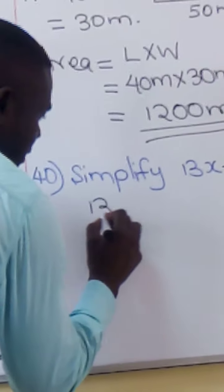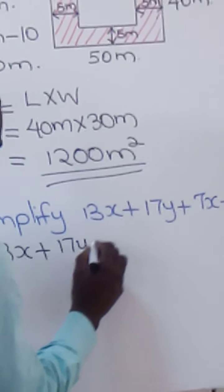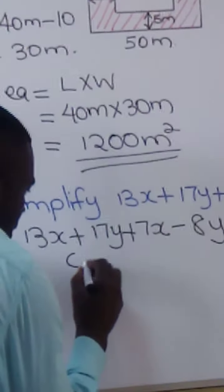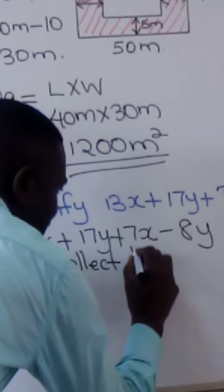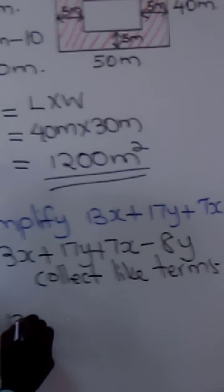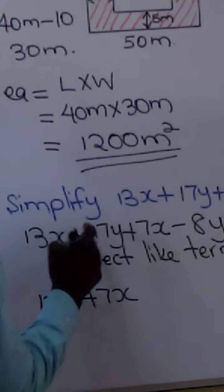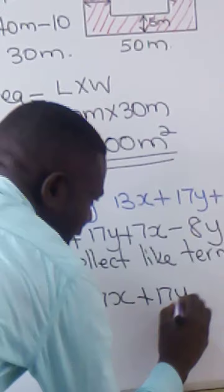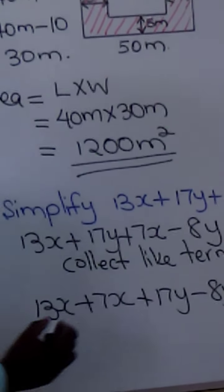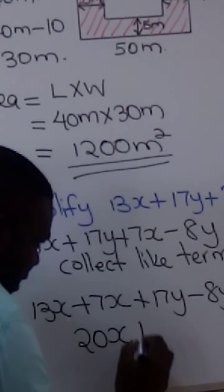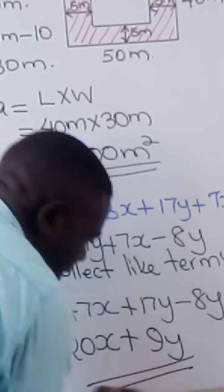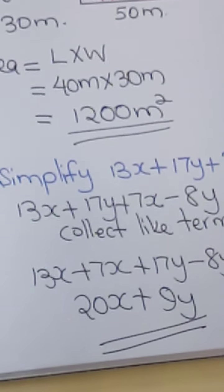Collecting like terms together: the x-terms are 13x + 7x, and the y-terms are 17y − 8y. 13 + 7 is 20, so that is 20x. 17 − 8 is 9, so that is 9y. The answer is 20x + 9y.